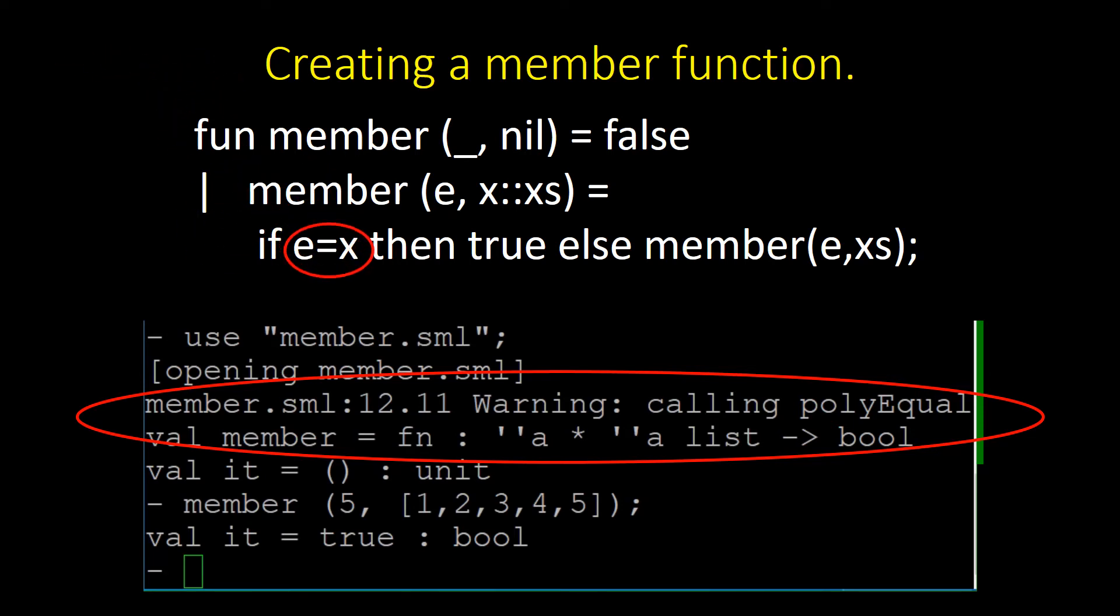Since the type of E and X are not known ahead of time, SML must first determine their types before it can see if they are equal. If we hard-coded it to only check one list, we could do a check for if 5 equals 1. It would not give us this warning, but that would be a very limited function.